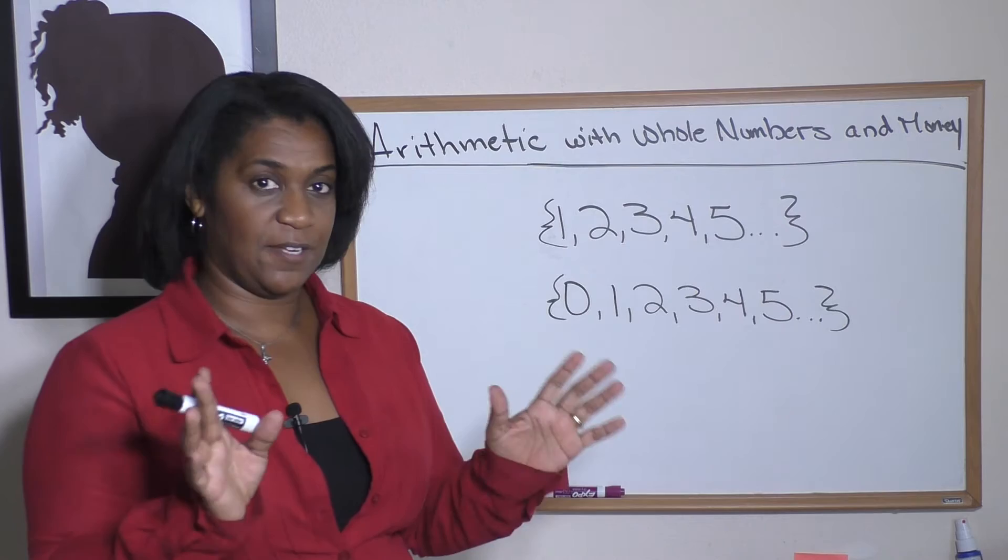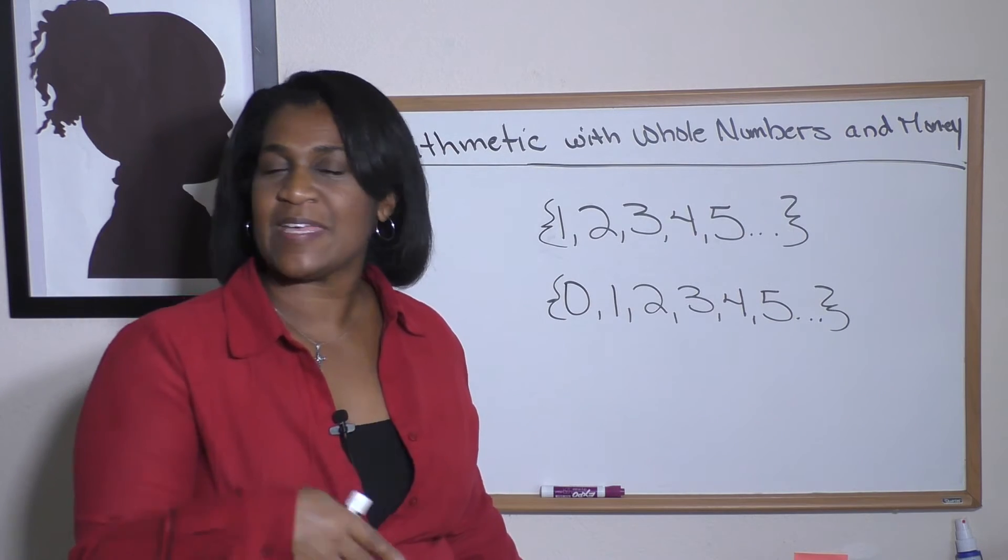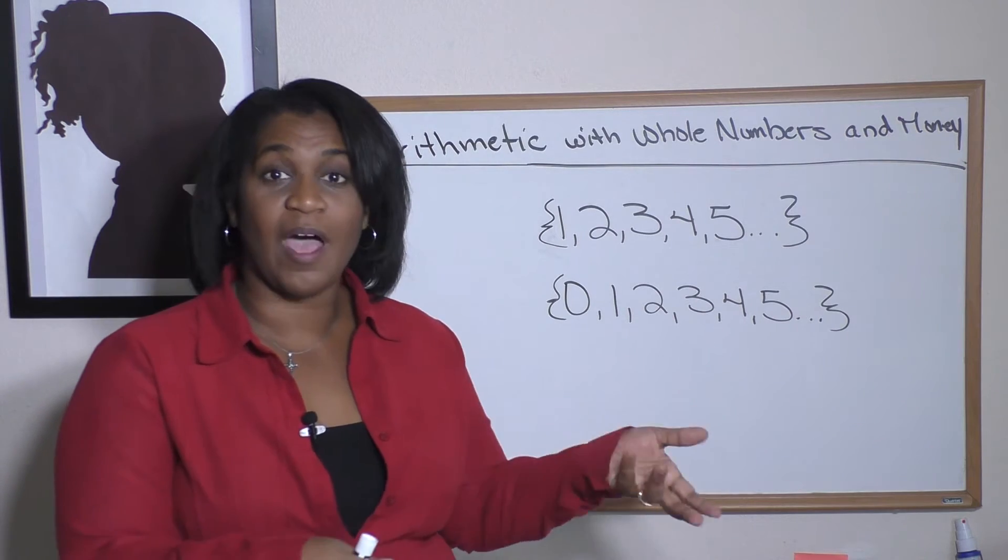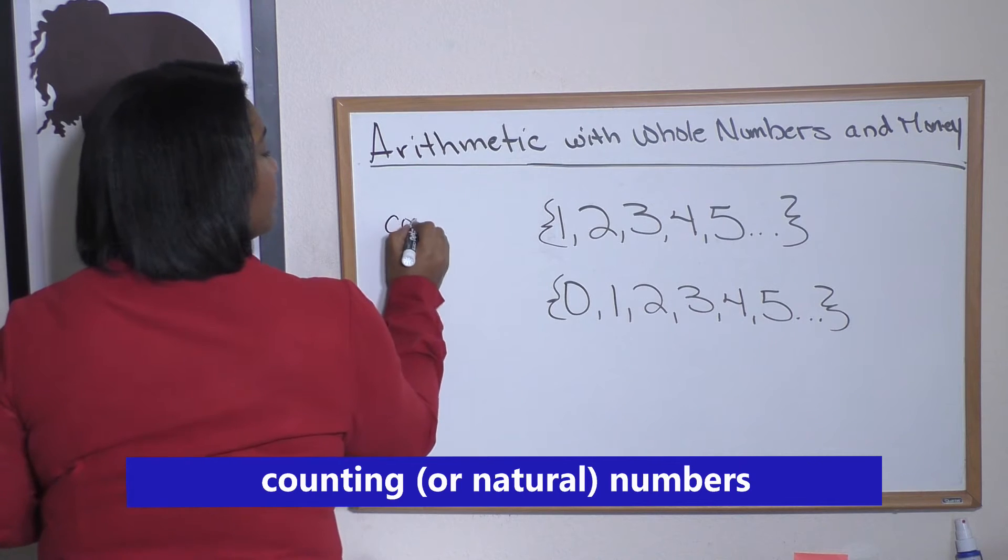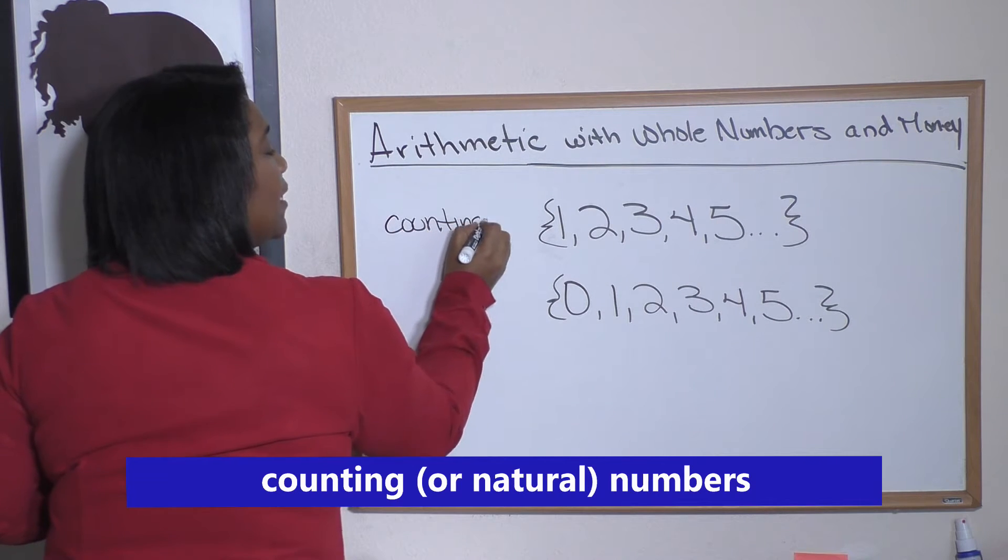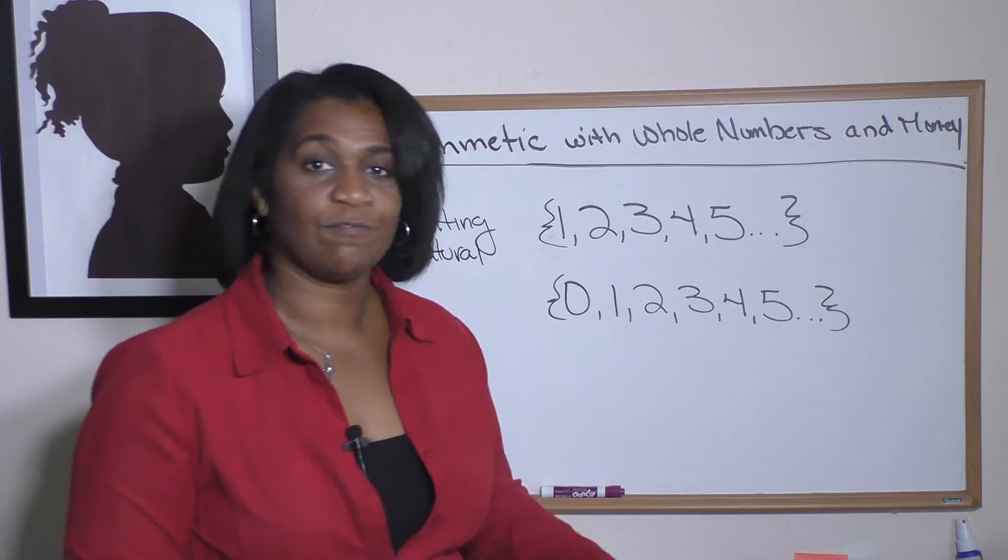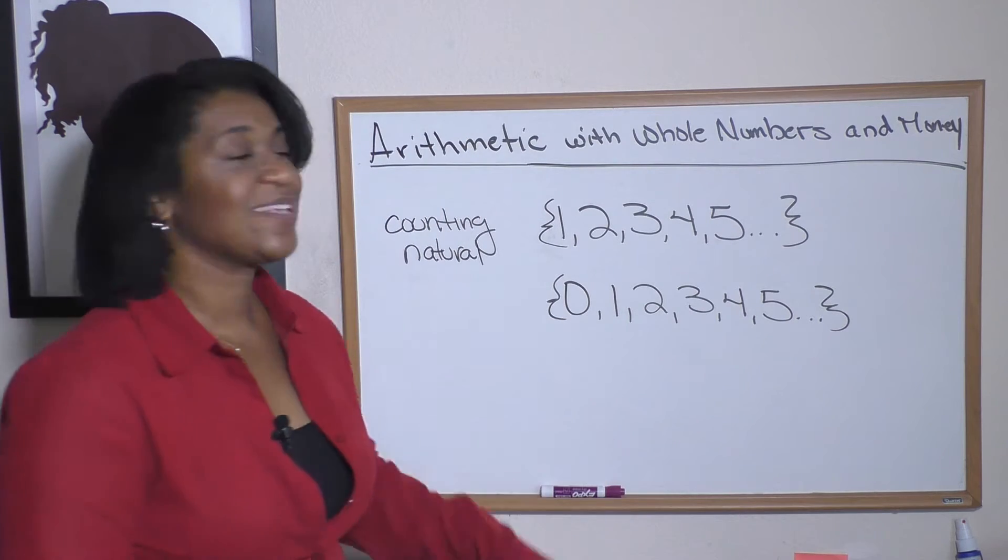The first one: 1, 2, 3, 4, 5. Isn't that how you count? If I said count, you'd start with one. So these are called counting numbers, or another name is natural numbers. I just think it's natural to count from one, two, three, four, five, six.